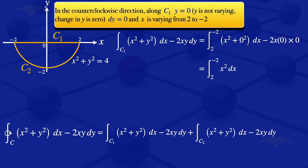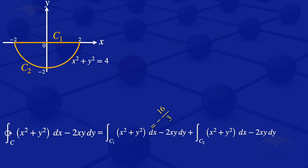That simplifies to the integral from 2 to minus 2 of x squared with respect to x. The integral of x squared is x cubed over 3, and when we put in the limits, we get minus 16 over 3. So the integral along curve C1 of x squared plus y squared dx minus 2xy dy equals minus 16 over 3.